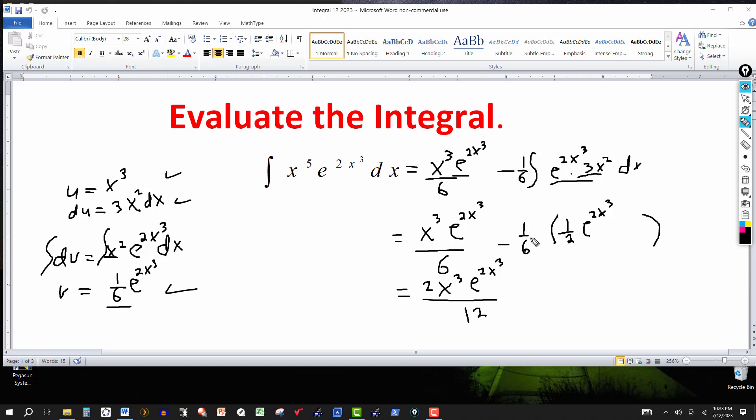And over here in this one, minus 1/6 and 1 half, that's going to be minus 1/12. And left with e to the 2x cubed here, plus the constant of integration.